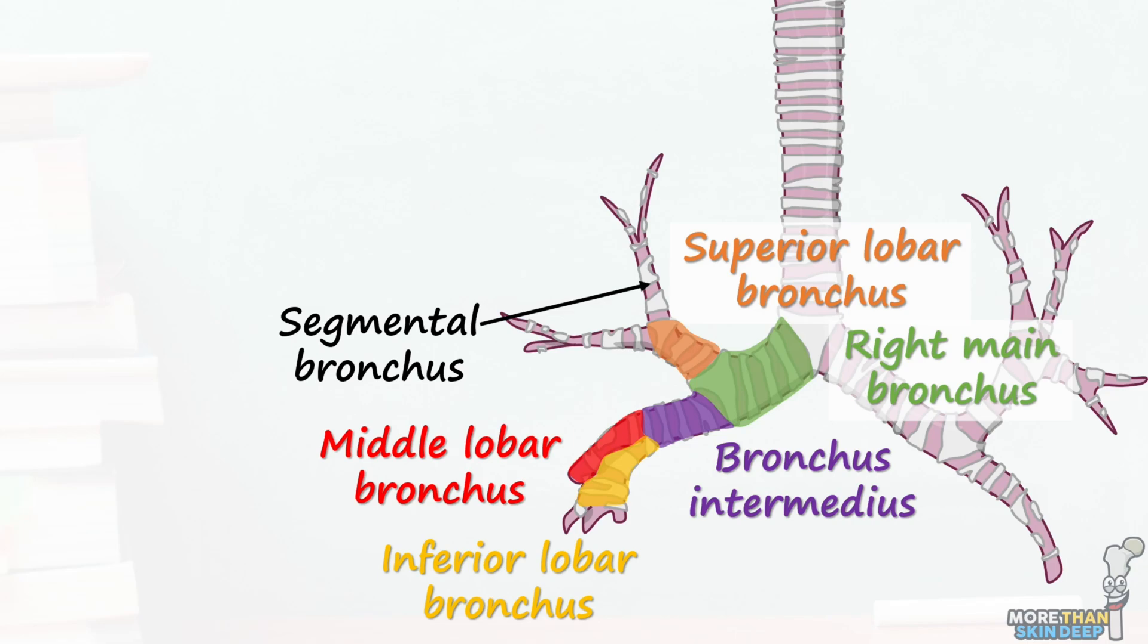The bronchopulmonary segments are considered the main functional units of the lung and act similarly to the segments of the liver. They are separated from one another by fibrous septa known as the pulmonary interstitium.